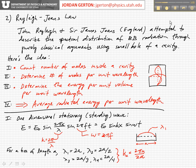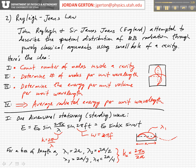If we consider a box of length A, as I've drawn over here, then the lowest frequency corresponds to a wavelength of two times the box length — that's this mode right here. The second mode has wavelength equal to 2A/2, or just A. The third mode is 2A/3, and the fourth mode is 2A/4. So you can see the pattern.